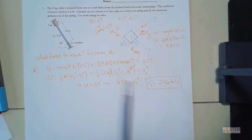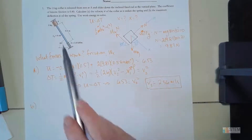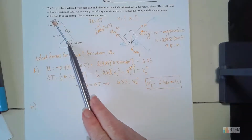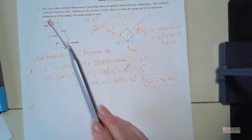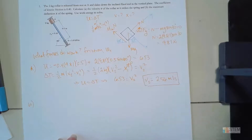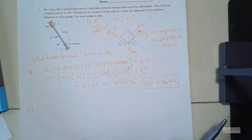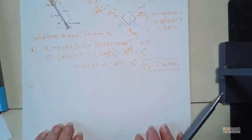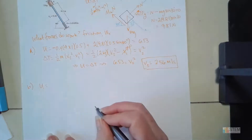So now we have the velocity when the collar hits the spring. Moving to Part B, which asks for the max deflection of the spring. The collar comes down, hits the spring, pushes it down, and could go back up. We want to know how far down the spring compresses. We'll use the same equation U equals delta T, except now we need to add something else — let's find U first.